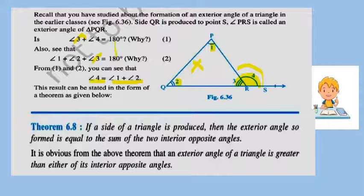This means the sum of these two interior angles equals the exterior angle PRS. So Theorem 6.8 states: If a side of a triangle is produced, then the exterior angle so formed is equal to the sum of the two interior opposite angles. From this theorem, it is obvious that an exterior angle of a triangle is always greater than either of its interior opposite angles, because it is the sum of those two angles.